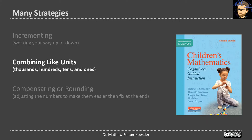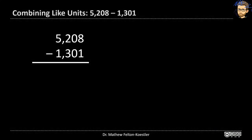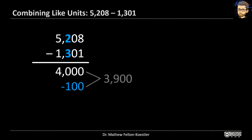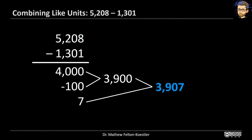The next strategy is combining like units. This is a common strategy kids will invent on their own. It looks similar to how you may have seen subtraction set up in school, but we work from the left side — the biggest values — instead of the right. Five thousand minus one thousand gives four thousand. Two hundred minus three hundred gives negative one hundred. Combining those gives three thousand nine hundred. Then eight minus one gives seven, for a total of three thousand nine hundred and seven.